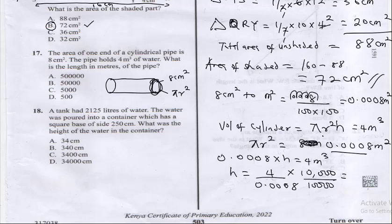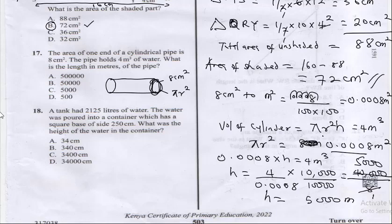This gives us 40,000 divided by 8. So 8 into 40,000: that gives us 5,000. Our h is going to be 5,000 meters. The correct answer here is C — 5,000.